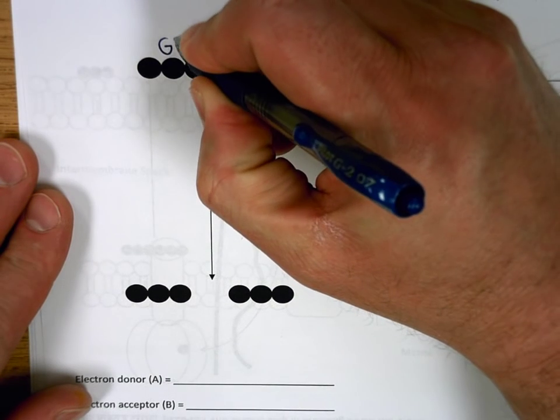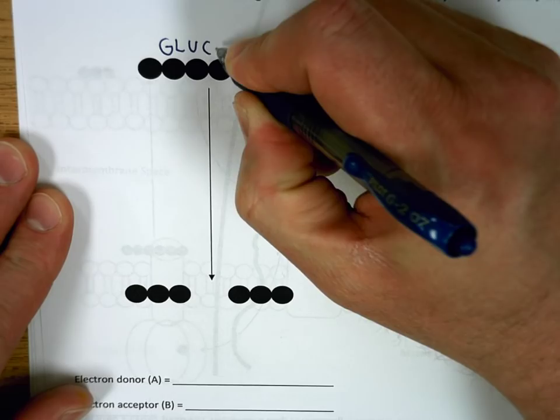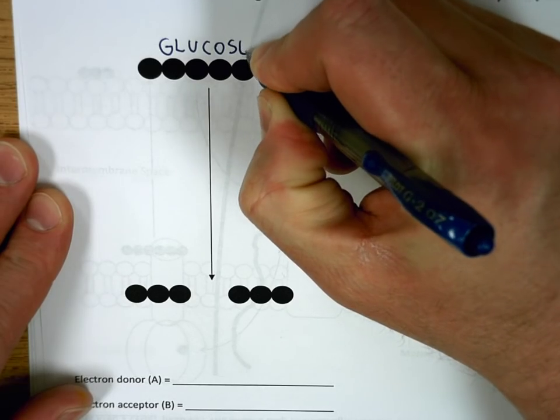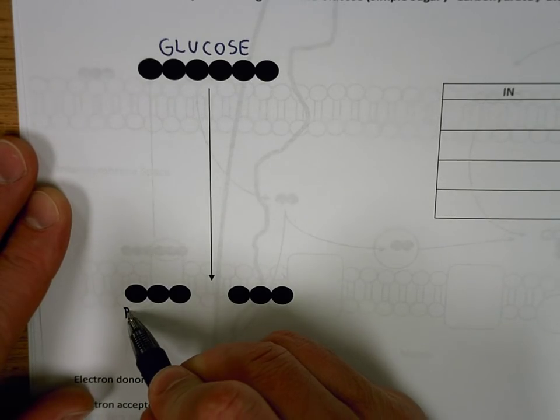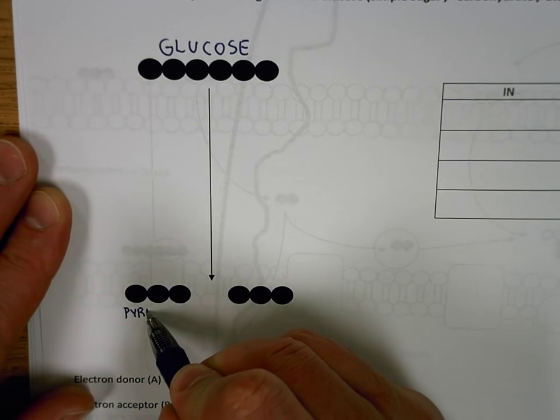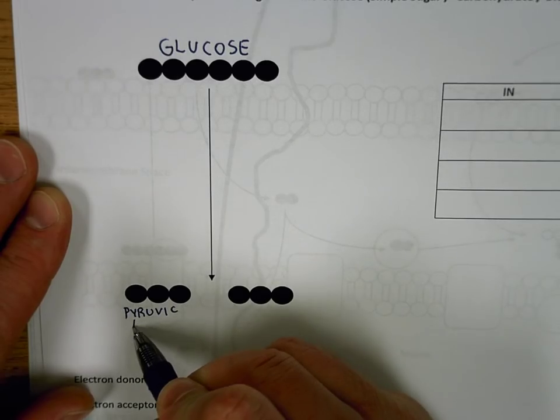The main idea here is you take your glucose molecule, six carbons, and the end result is it's going to be broken in half into two three-carbon pyruvic acid molecules.